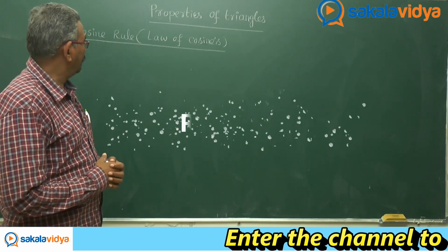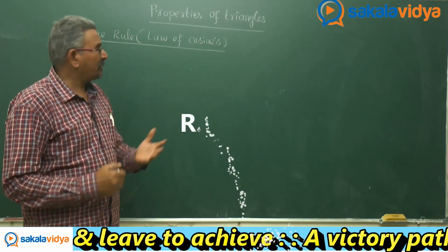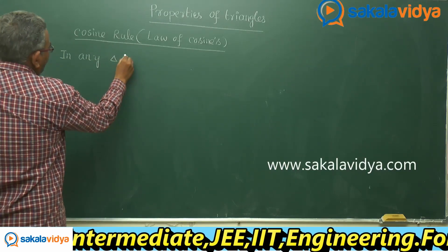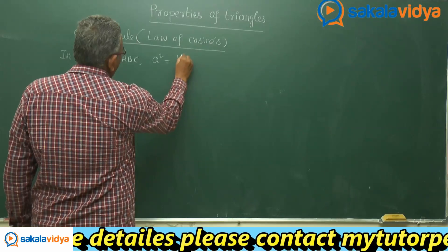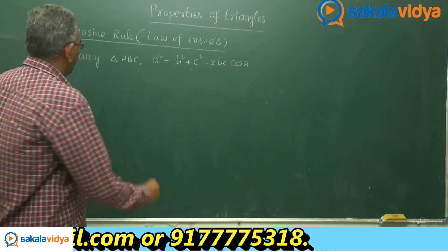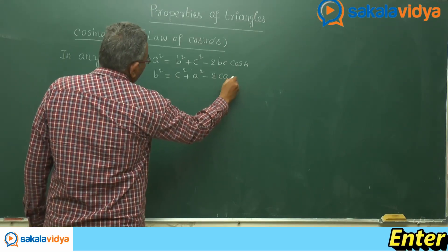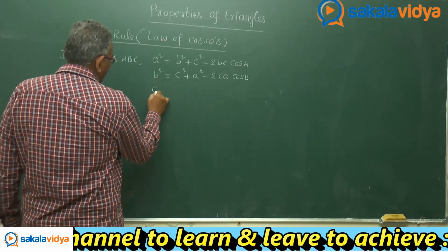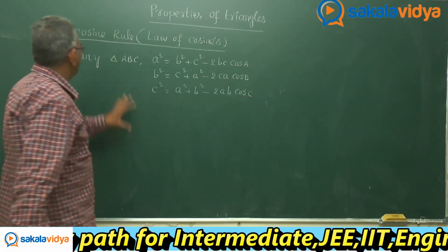Let us discuss one more rule on properties of triangles: the cosine rule, or law of cosines. In any triangle ABC, a² = b² + c² − 2bc·cos A. Similarly, b² = c² + a² − 2ca·cos B. And since this is a cyclic order, c² = a² + b² − 2ab·cos C. This is the cosine rule.